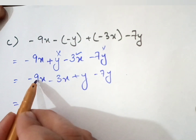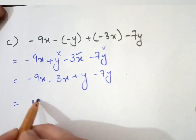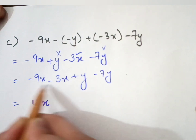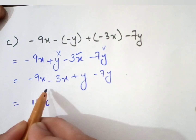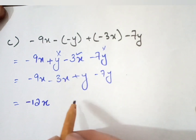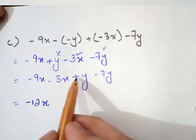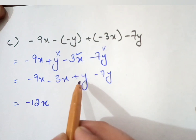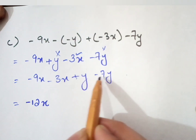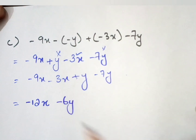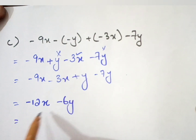Now solve the terms: minus 9x and minus 3x both have the same sign, so they are added — 9 plus 3 equals 12, and both terms have the minus sign so we write minus 12x. Then for the y terms: plus 1y minus 7y — when there is no coefficient that means a coefficient of 1 — minus 7 plus 1 equals minus 6y.